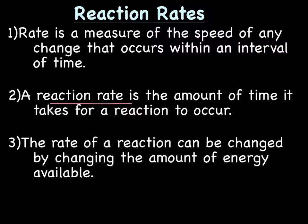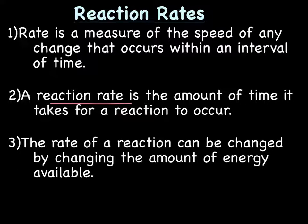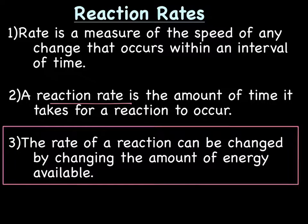Remember the collision theory. To get effective collisions, you need to have enough energy. If you only have a little bit of energy, the reactants will be hitting each other and only sometimes will the collision be effective. However, if there's a lot of energy, more often will you get effective collisions leading to the formation of more product. So an important part of changing a reaction rate is to change the amount of energy available.